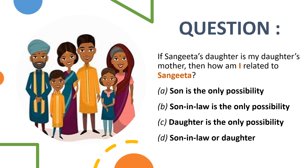Options: A. Son is the only possibility. B. Son-in-law is the only possibility. C. Daughter is the only possibility. D. Son-in-law or daughter.